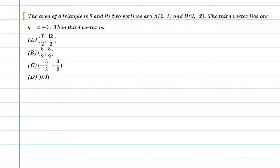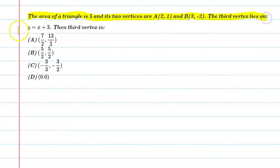Hello students, let's solve this question. The area of a triangle is 5 and its two vertices are A(2, 1) and B(3, -2). The third vertex lies on y = x + 3. Find the third vertex.